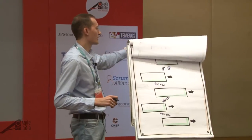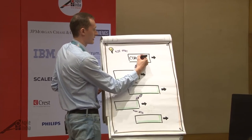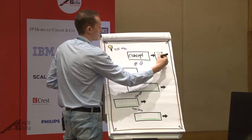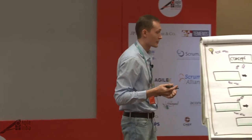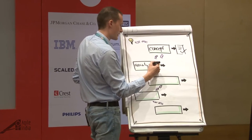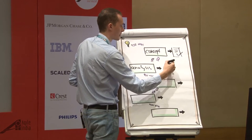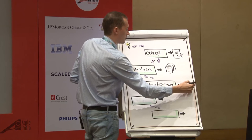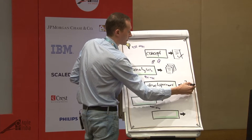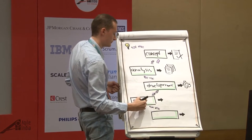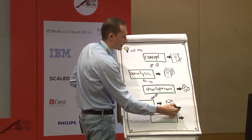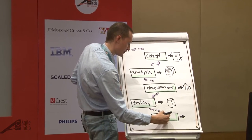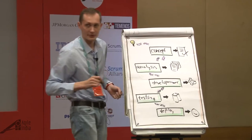If we look at the traditional way of running projects, we create a business case in the concept phase, deciding how much money to allocate and how long it's going to take. Then you move to analysis, create documentation — a traditional waterfall way — then development, then testing of unverified code to get some sort of product, then deployment to get to your happy customer. That's how we traditionally ran projects and why we needed a business case.